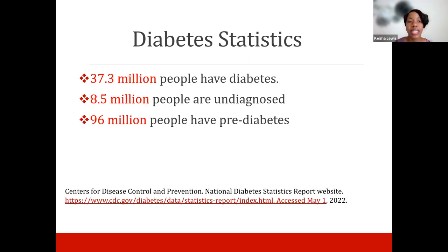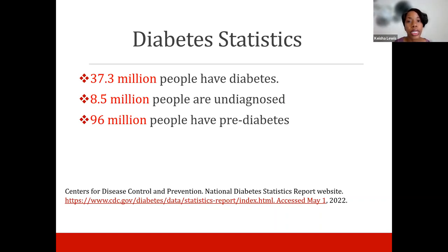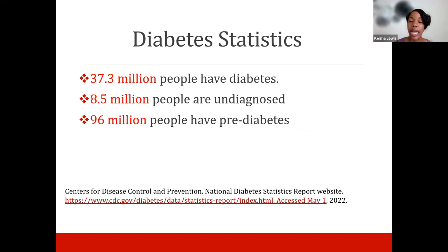Some of the statistics of diabetes: diabetes is increasing and it is in our communities at an alarming rate right now. We're seeing almost 1.4 million new cases every year. Currently, 37.3 million people have diabetes, and 8.5 million people are diagnosed. Another 96 million people have a condition known as prediabetes. Comparing age groups, we're finding higher rates of diabetes from ages 45 to 64, and those age 65 and older, compared to adults aged 18 to 44.